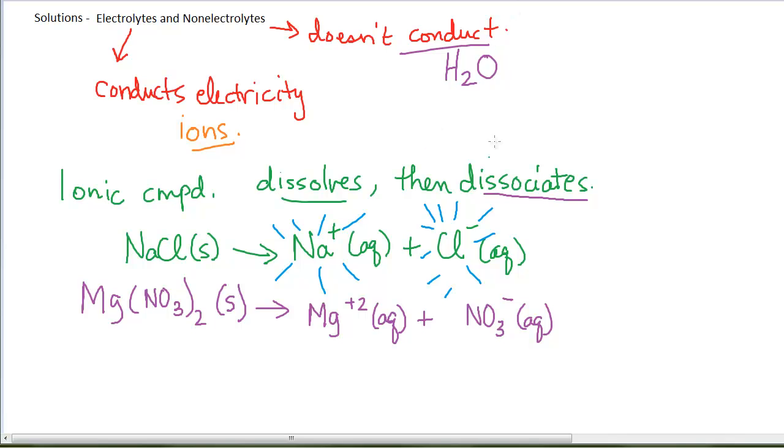In order to balance this, this is like a chemical reaction that needs to be balanced, I need a 2 in front of the nitrate ions. So this is a chemical equation representing the dissociation of magnesium nitrate.